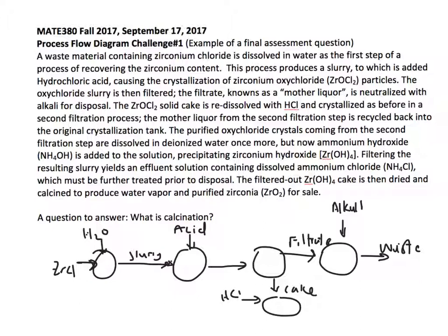We've got the cake, we've got more acid, and then we have the mother liquor and the second cake. The mother liquor from the second filtration step is recycled back into the original crystallization tank.